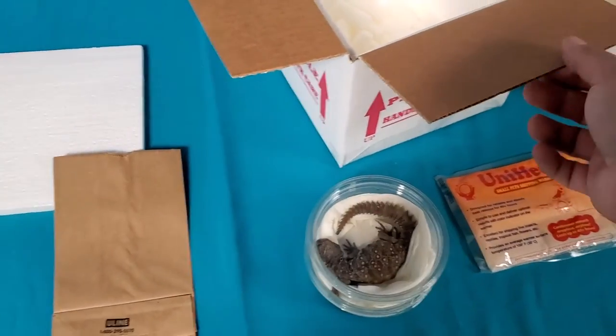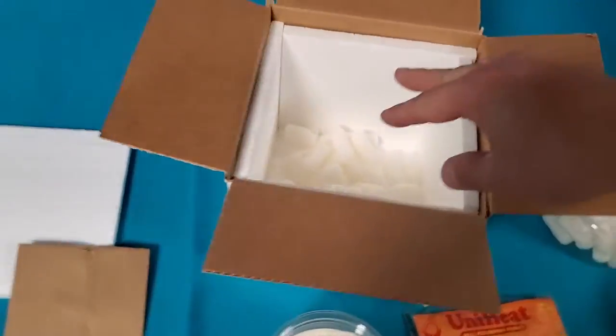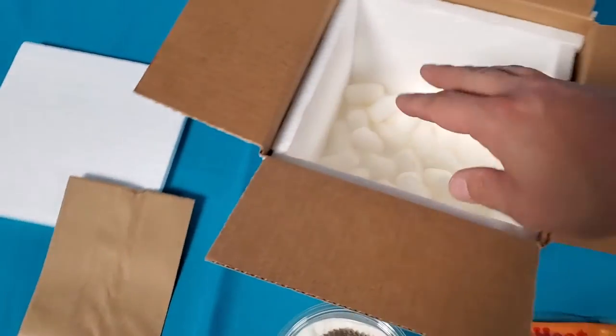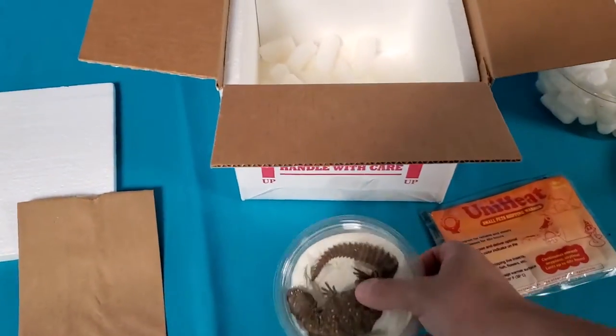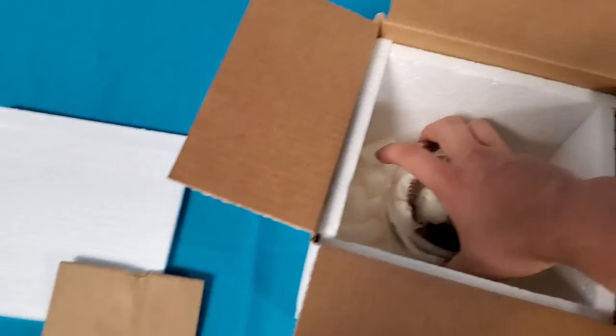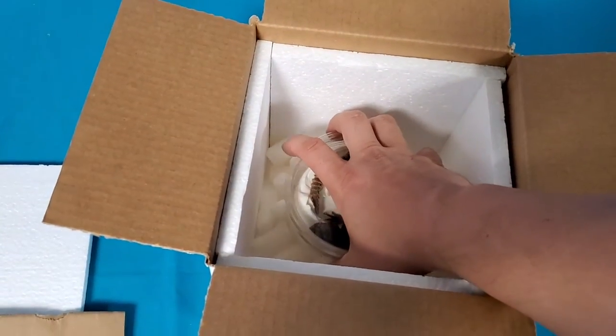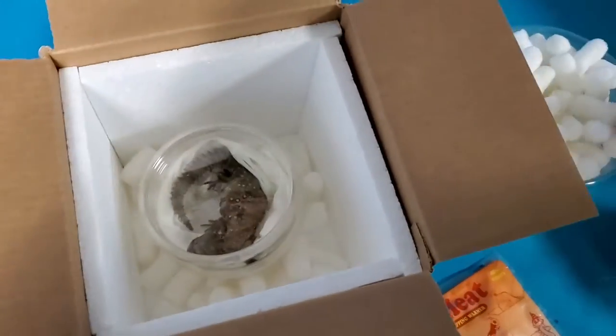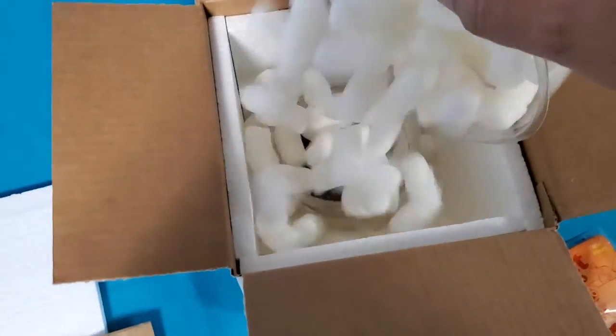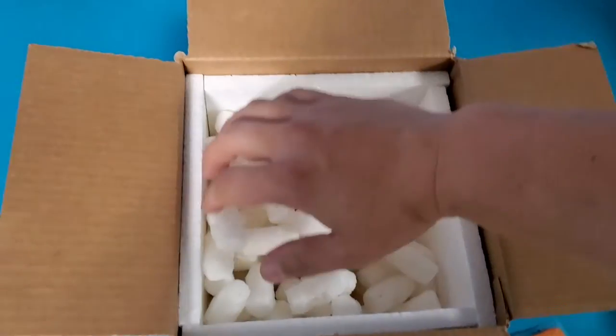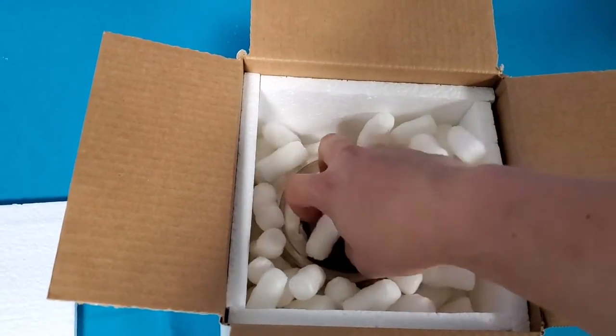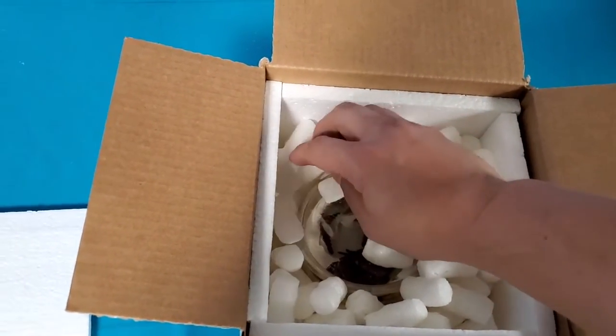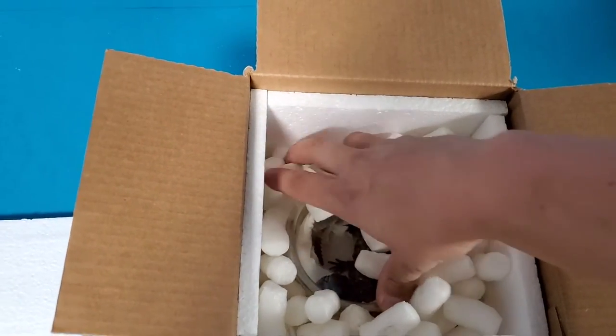So in this particular box, I always put some peanuts or newspaper down at the bottom to provide some cushion. And then I put the uromastyx inside of the box directly in the center. And now we're going to fill in the sides with some more peanuts. So that will keep them centered inside of their shipping box.